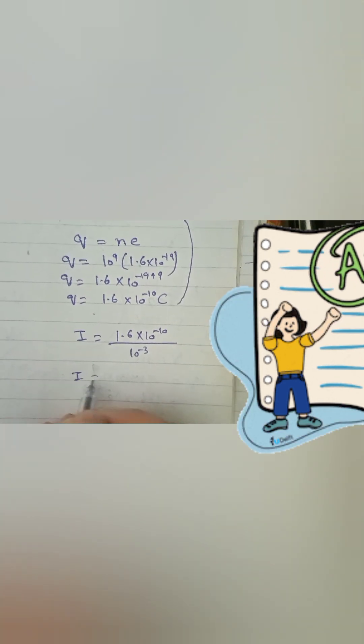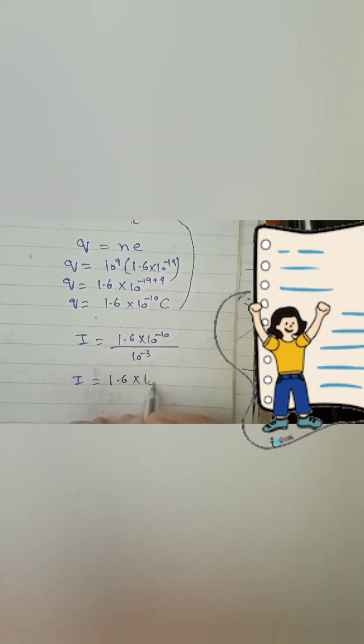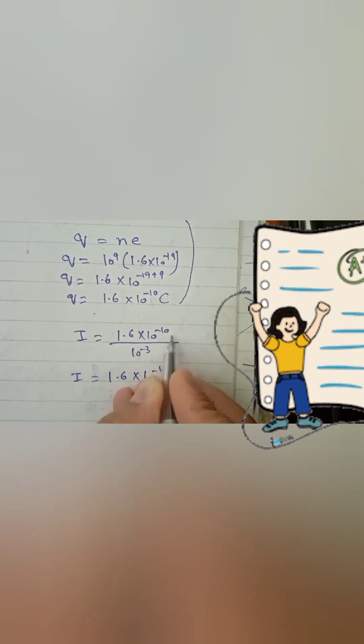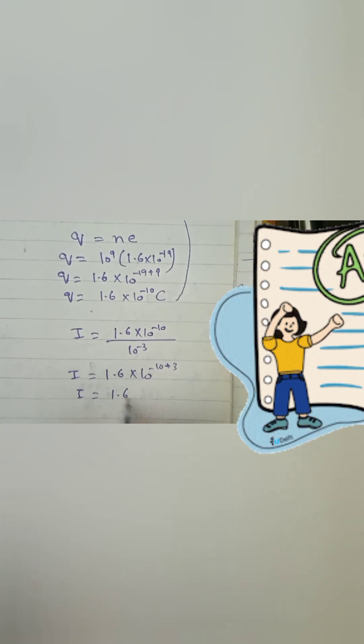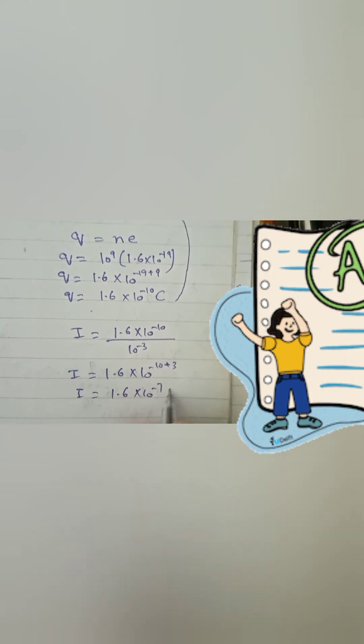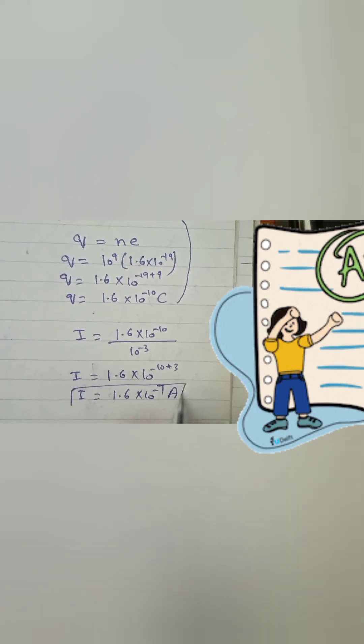After calculating we obtain 1.6 into 10 raised to the power minus 10. We take denominator to numerator. The answer is 1.6 into 10 raised to the power minus 7 ampere.